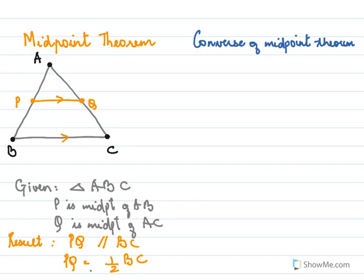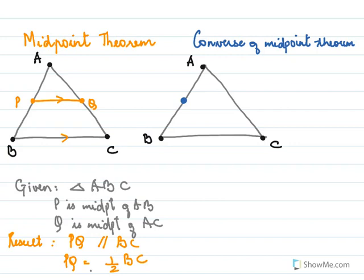Now I'll look at the converse of the midpoint theorem. For the converse, we again have a triangle ABC and we have one midpoint, that is P. But through this midpoint we have a line that is parallel to BC. As this line moves we can say it intersects at the other midpoint, so Q is also a midpoint.